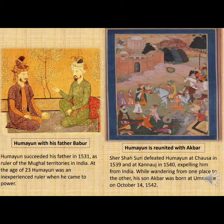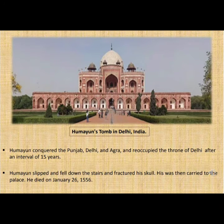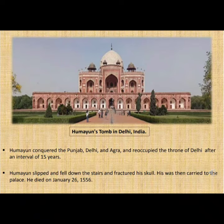Sher Shah Suri defeated Humayun at Chausa in 1539 and at Kannauj in 1540, expelling him from India. While wandering from one place to another, his son Akbar was born at Amarkot on October 14, 1542. Humayun conquered the Punjab, Delhi, and Agra and reoccupied the throne of Delhi after an interval of 15 years. Humayun slipped and fell down the stairs and fractured his skull. He was then carried to the palace and died on 26 January 1556.